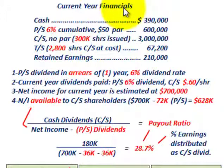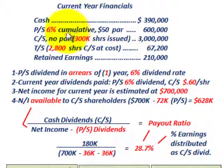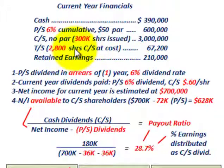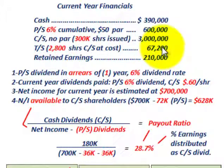We're going to look at current year financials where the company has cash of $390,000, preferred stock at 6% cumulative with a $50 par for $600,000, common stock with no par at 300,000 shares issued for $3 million, treasury stock of 2,800 shares at a cost of $67,200, and retained earnings of $210,000.